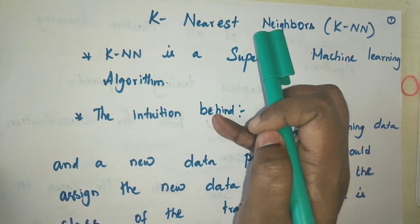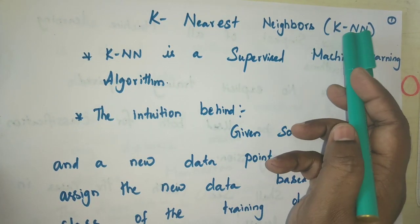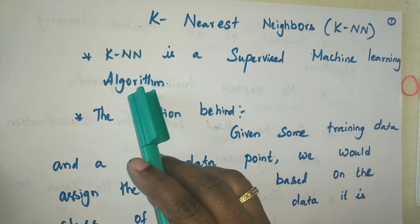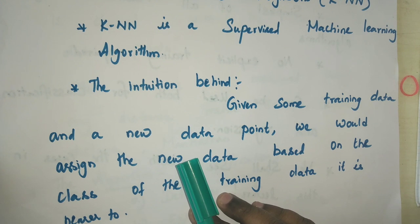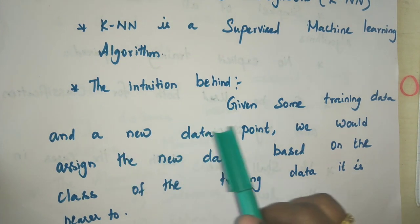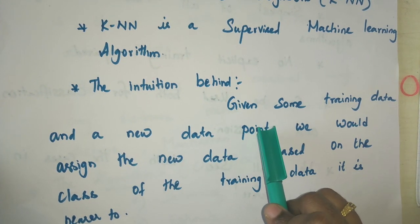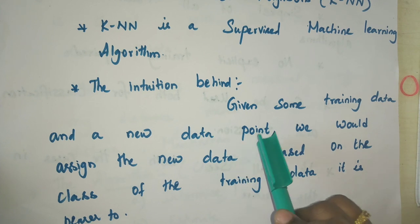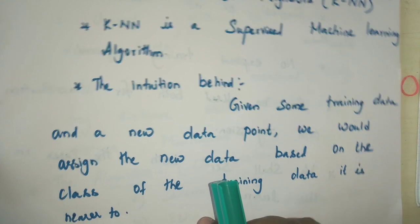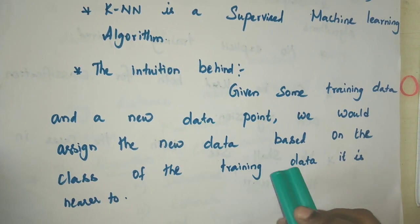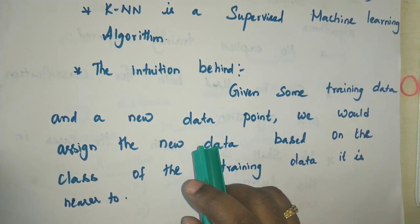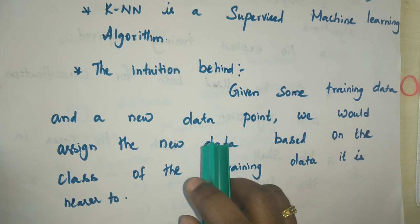Hello all, today we are going to see about K-Nearest Neighbors algorithm, that is KNN algorithm. KNN is a supervised machine learning algorithm. The intuition behind KNN algorithm is that when we are given a new data point — a test point — which needs to be classified or predicted, it is assigned based upon the training data which are closer to it, using some distance metrics.